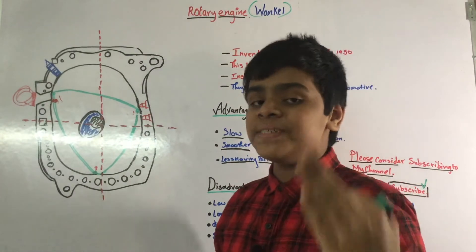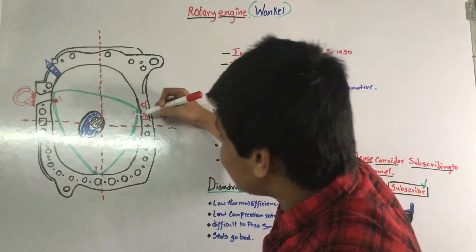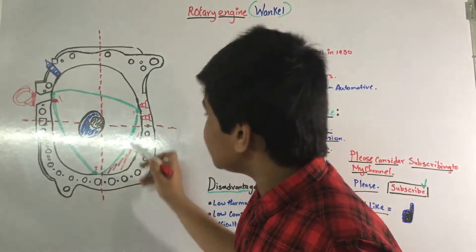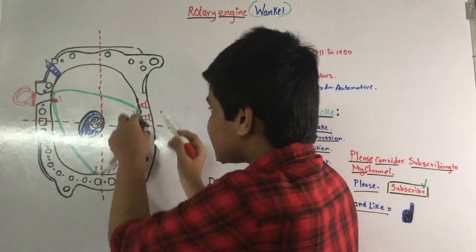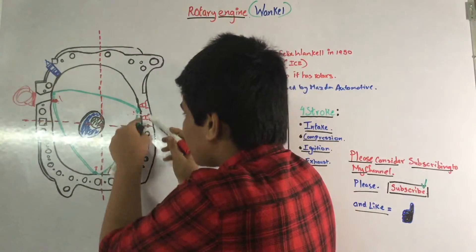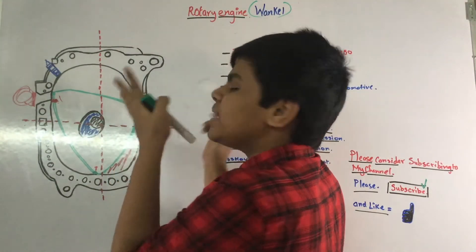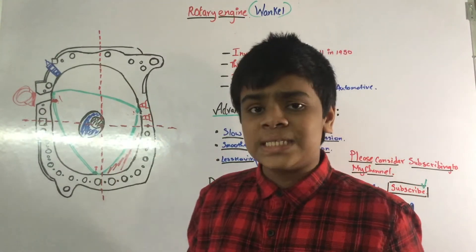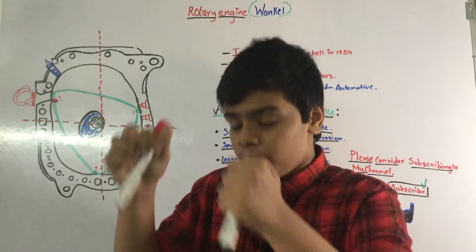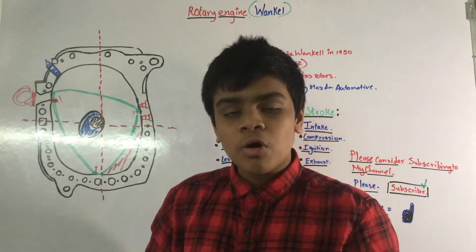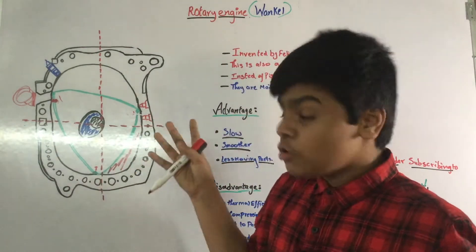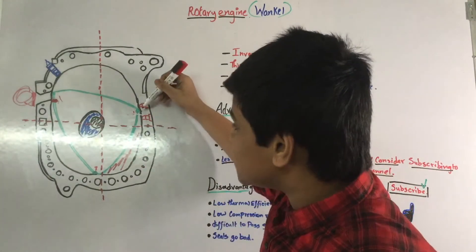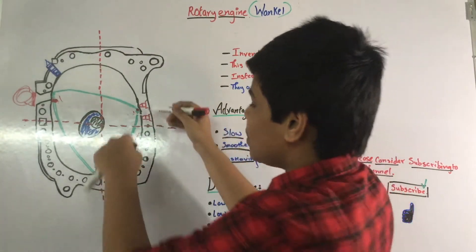After compression, there is only a very small space left, and two spark plugs ignite the air-fuel mixture to create combustion. The reason there are two spark plugs is that the space is elongated, so flames don't spread equally from one plug — two spark plugs ensure the fuel-air mixture ignites evenly throughout that compressed area.